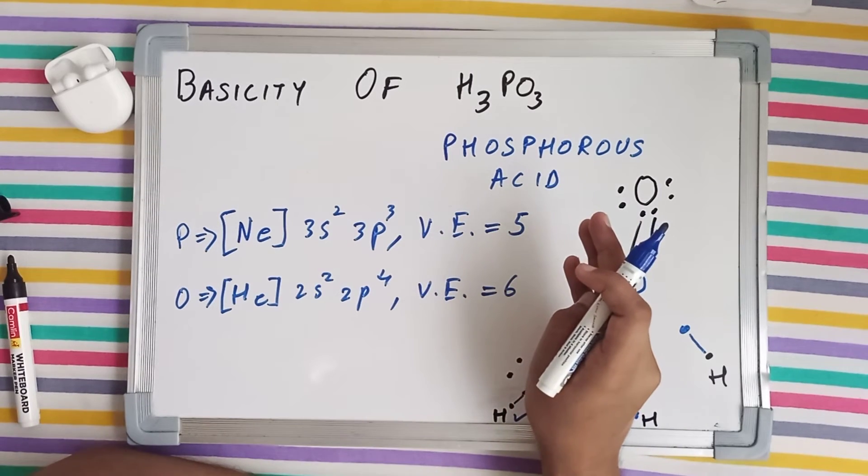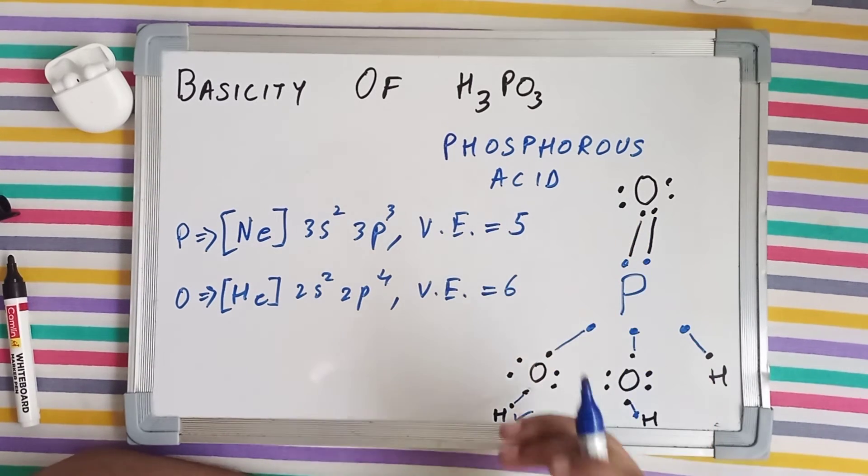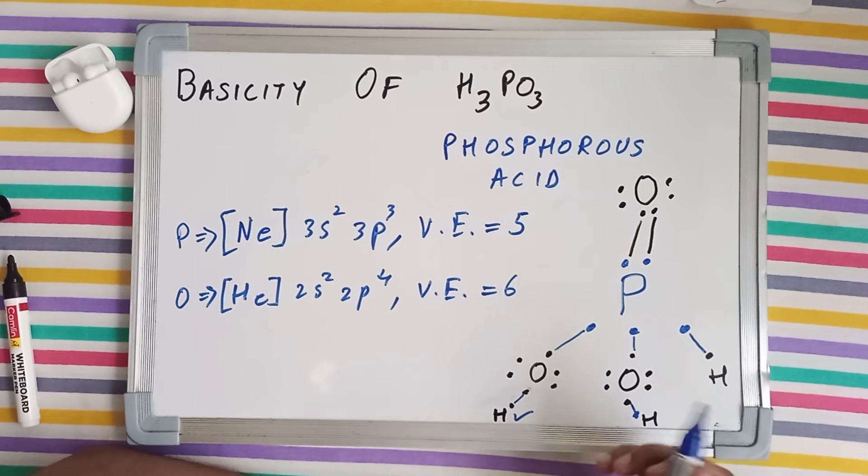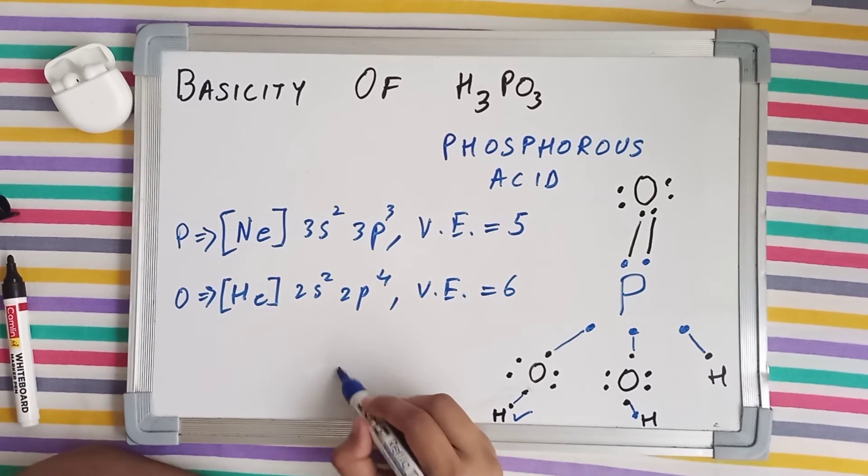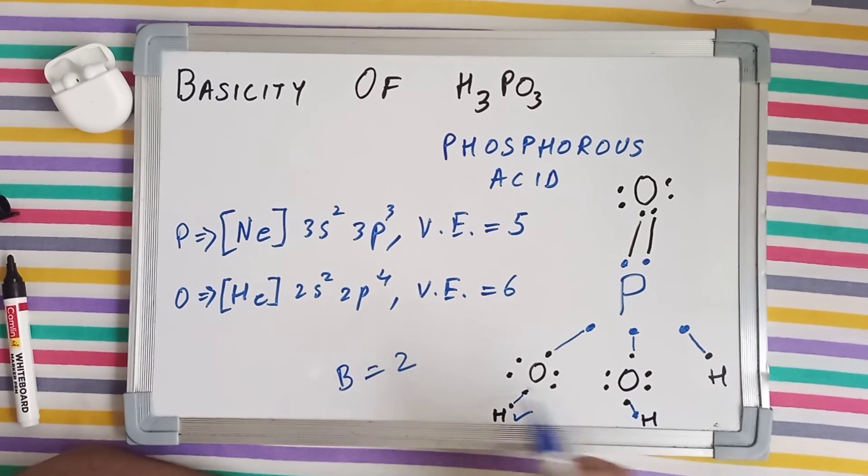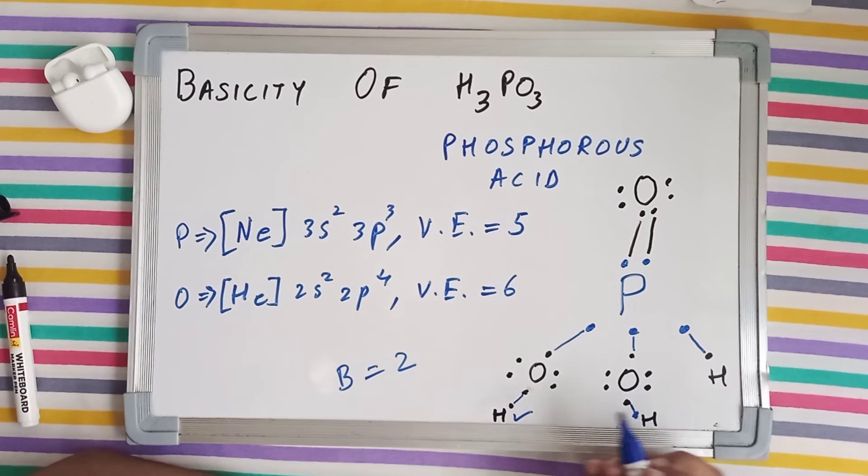For basicity we say that for an acid, the number of H⁺ ions an acid can give is equal to the basicity. So there are three hydrogens here, but the basicity of H3PO3 comes out as 2.